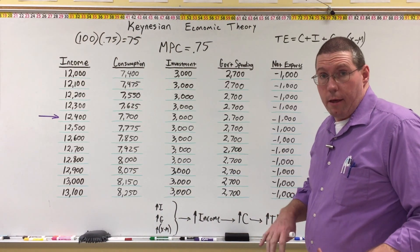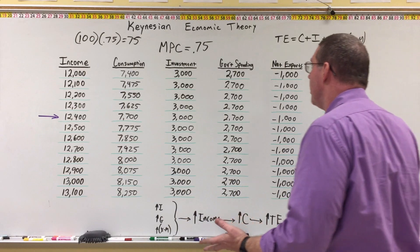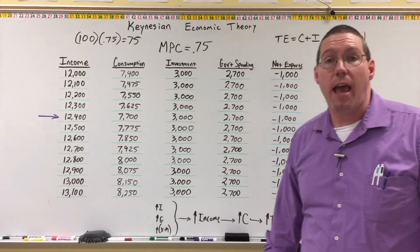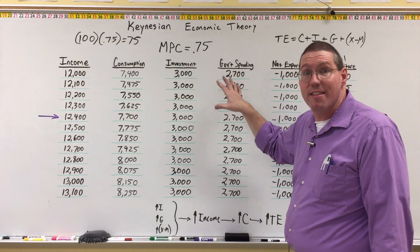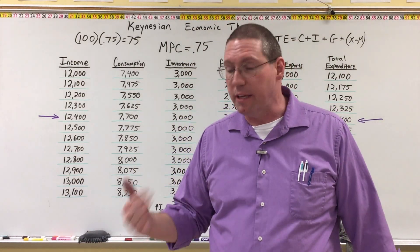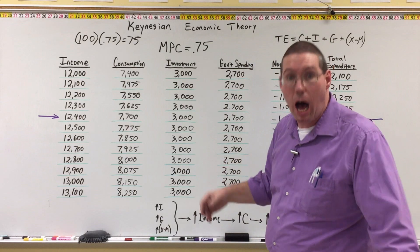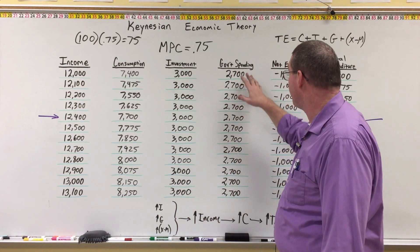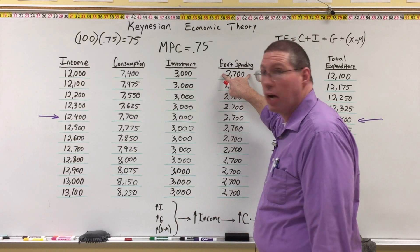Let's say that government leaders want to increase real GDP and want to manipulate the economy. What Keynes says they can do is spend more money. The government is able to spend more money — in fact, the federal government is allowed to spend more money than they earn in taxes. Let's say, for the sake of argument, that Congress decides to spend $100 billion more than they're currently spending. So we're going to increase government spending from 2,700 to 2,800.